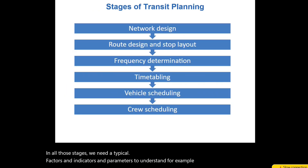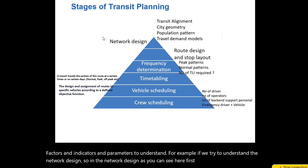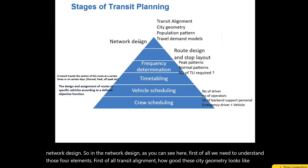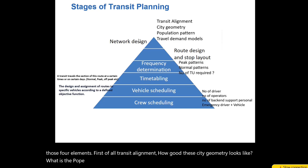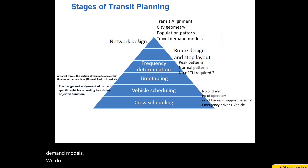If you try to understand the network design, there are four elements we need to consider. First, transit alignment. Second, how the city geometry looks. Third, what is the population pattern — where the maximum number of people are actually living. And fourth, what kind of travel demand models we have and what we need to fulfill in terms of people's demand.